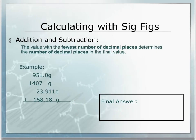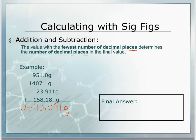When we are calculating with addition and subtraction, we're going to be looking at number of decimal places. The value with the fewest number of decimal places will determine the number of decimal places in our final answer. In this example, I've stacked the numbers lining up the decimal point. Put these into your calculator to get a calculator answer of 2540.091 grams. However, this answer has three decimal places but we can't record all three because not all of the measurements had three decimal places.